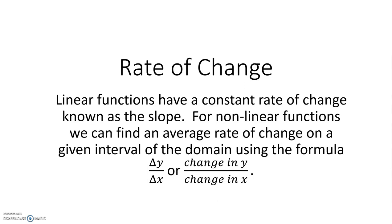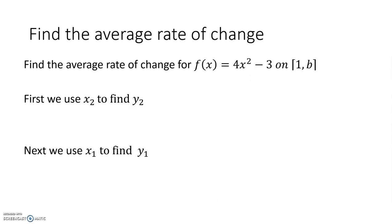So let's look at our first example. Find the average rate of change for the function on the given interval 1 to b. What we have to know is that the given interval tells us x₁ and x₂.